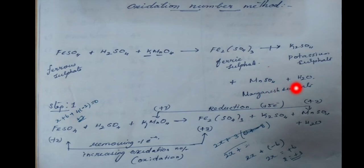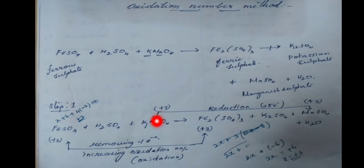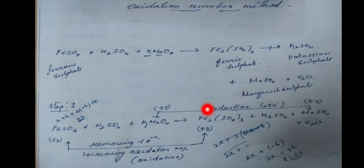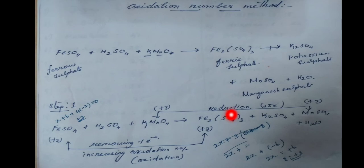Step one: ferrous sulfate oxidation state +2. KMnO4 — MnO4- manganese oxidation state +7. Ferrous sulfate converts to ferric sulfate: +2 to +3. Manganese MnO4- goes from +7 to MnSO4 +2. That is +7 to +2, gaining five electrons — reduction reaction, decreasing oxidation number.